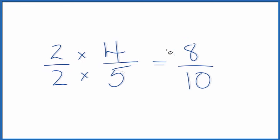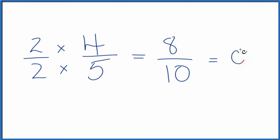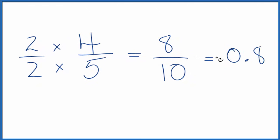So this is an equivalent fraction. If you divide four by five, you'll get 0.8. If you divide eight by ten, you'll get 0.8. So they're equivalent fractions.